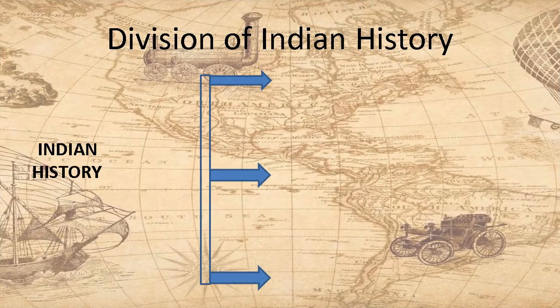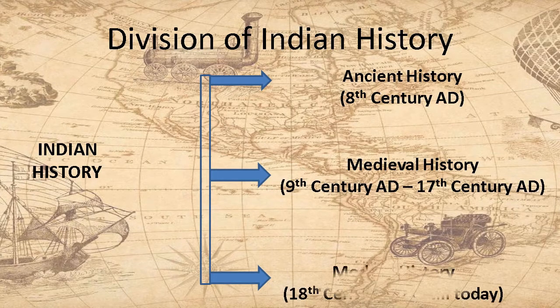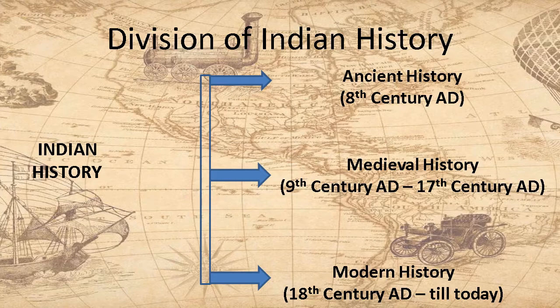As we all know, Indian history is divided into three parts, i.e. ancient history, medieval history, and modern history. Ancient history deals with the old stone age and civilizations, whereas medieval history deals with kings and the expansion of their territories. Modern history deals with the British rule in India. Till now, we have studied the history of ancient, medieval, and modern India. This year, we will study the history of India in the post-independence era.